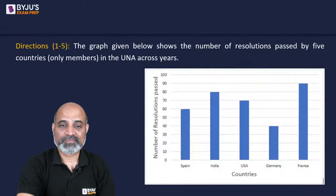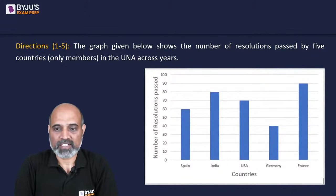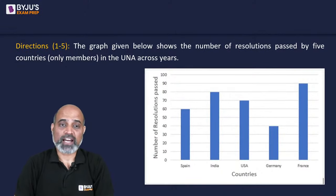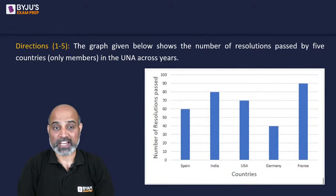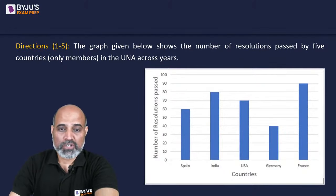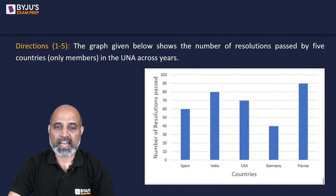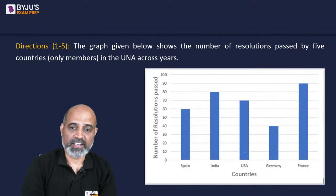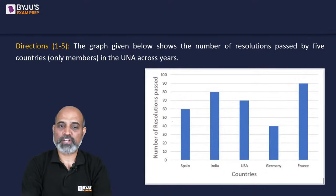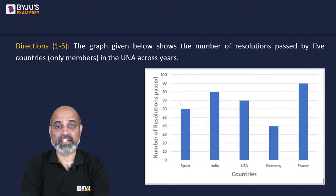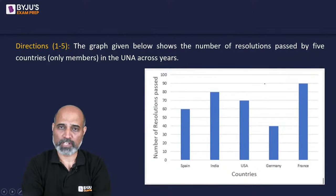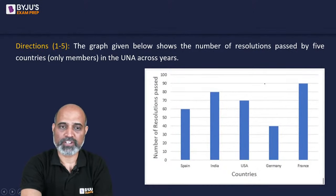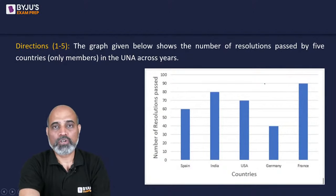So let's quickly begin. This is the first set — it looks like a bar graph. The graph shows the number of resolutions passed by five countries, only members in the UNA. We have Spain with 60, India with 80, USA with 70, Germany with 40, and France with 90. So we have different values for the number of resolutions passed by these five countries. There is nothing more to infer from here.